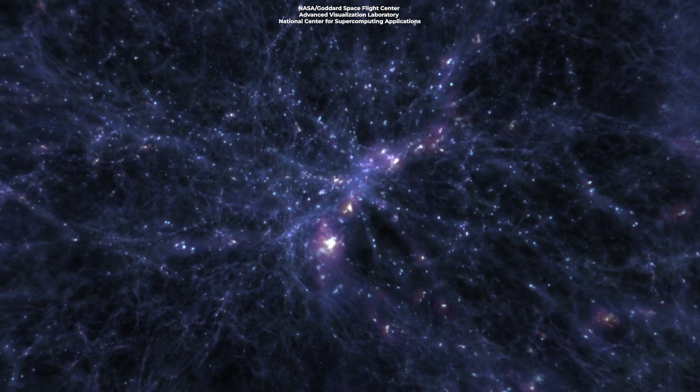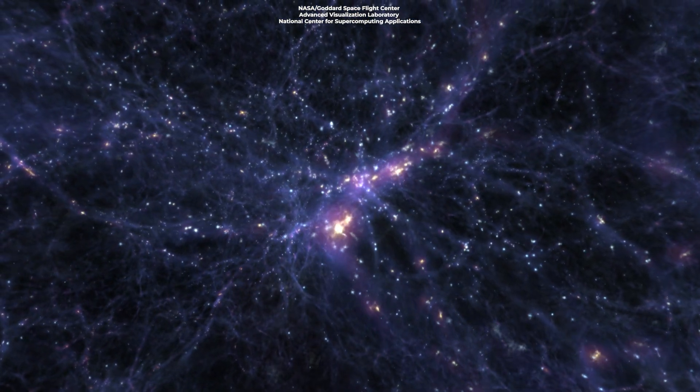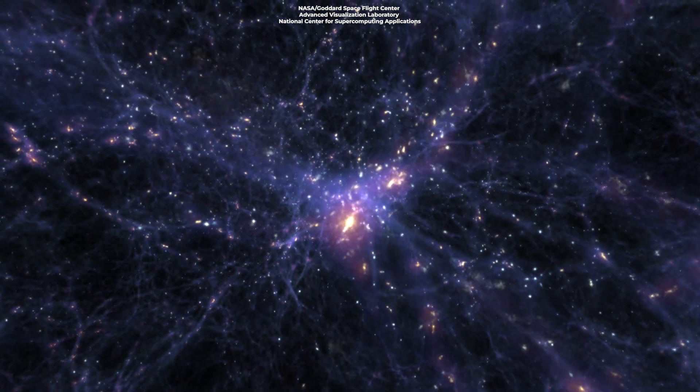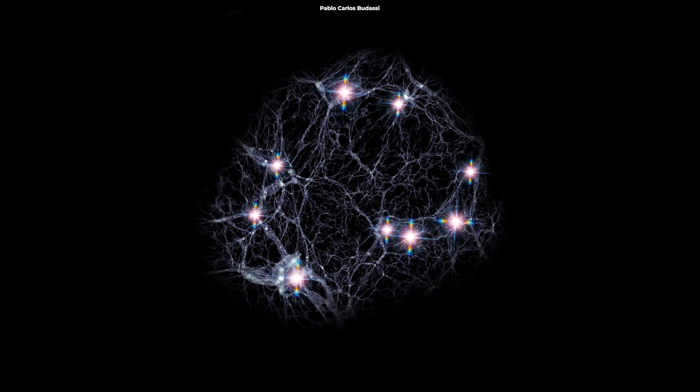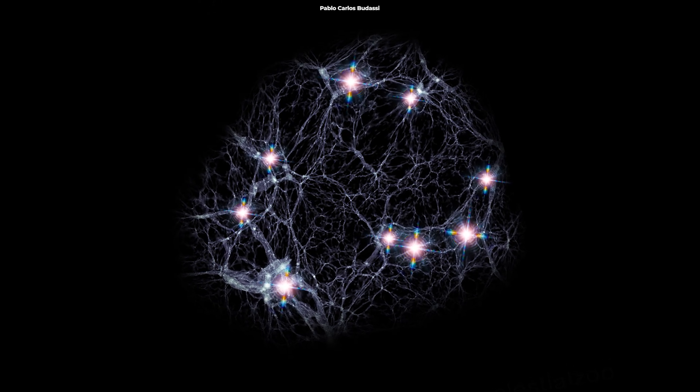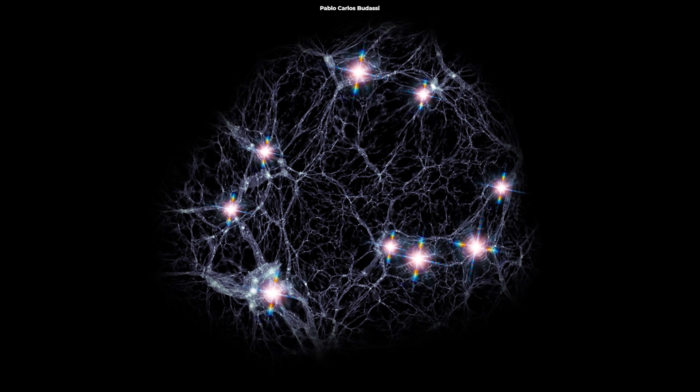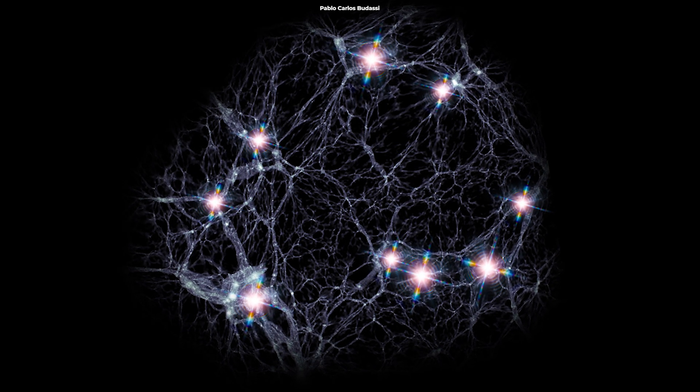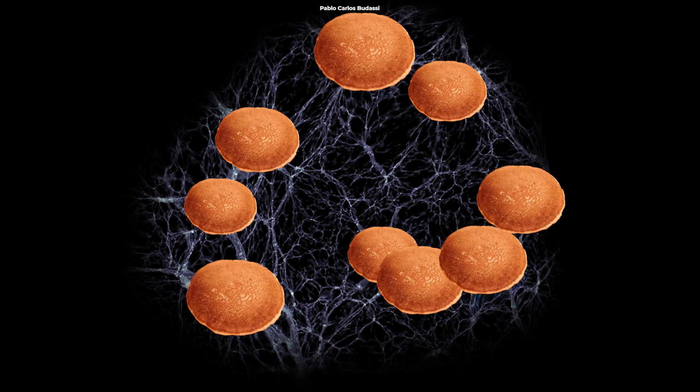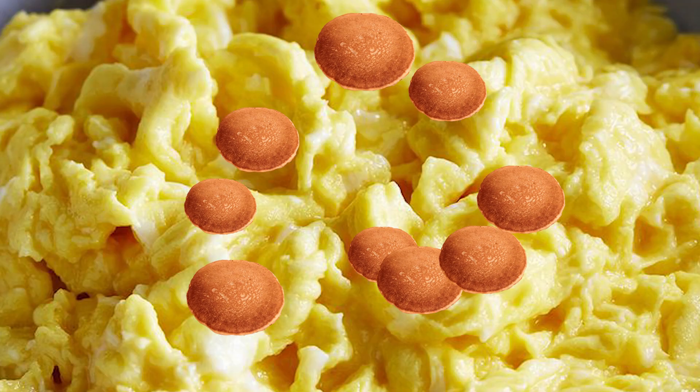But more importantly, the giant GRB ring could potentially shake up our understanding of cosmic structures and the formation of the universe. This massive ring isn't something you can just brush off as a fluke. It's too big, too organized, and too darn fascinating. It's like finding a perfectly arranged stack of pancakes in a world of cosmic scrambled eggs.